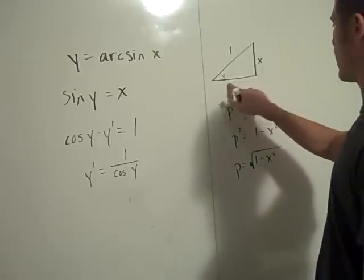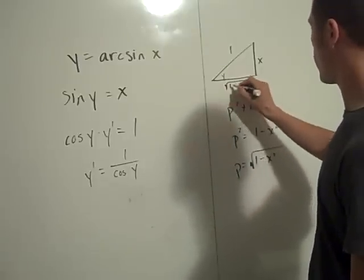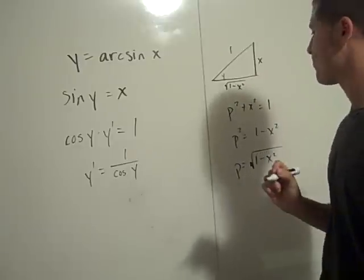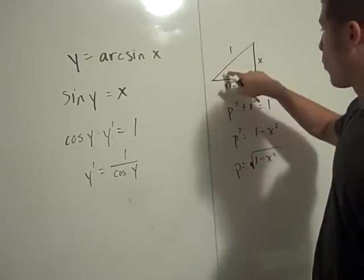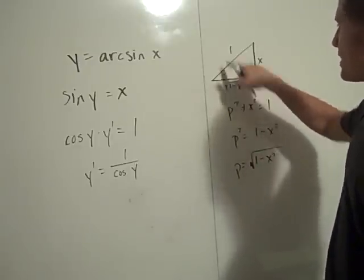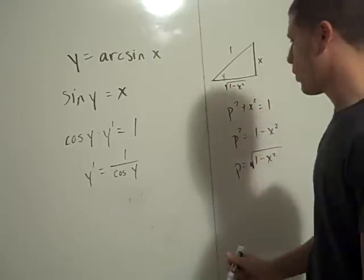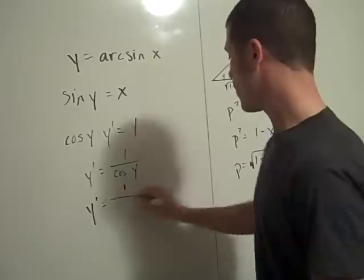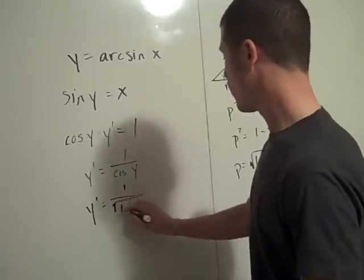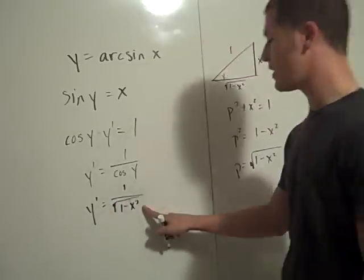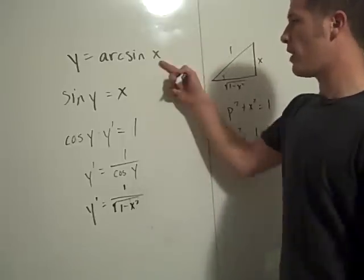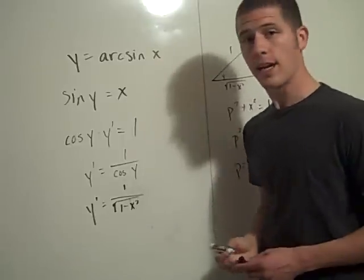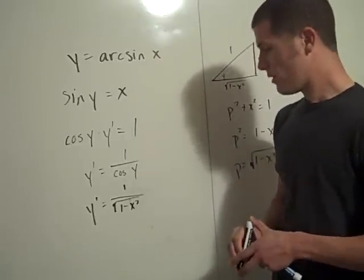So I know this thing right here is the square root of 1 minus x squared. Good, so I know the cosine of y then is the square root of 1 minus x squared over 1 or just the square root of 1 minus x squared. And therefore y prime is 1 over the square root of 1 minus x squared. And this thing is the derivative of y equals arc sine x. Very nice.